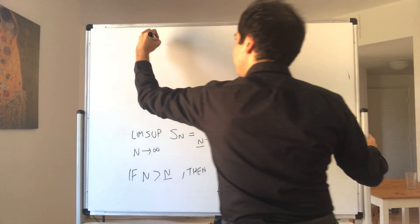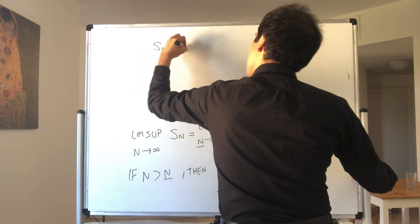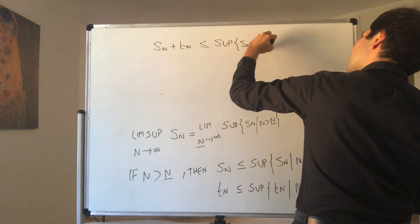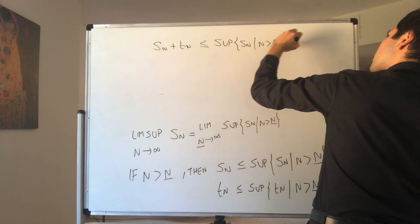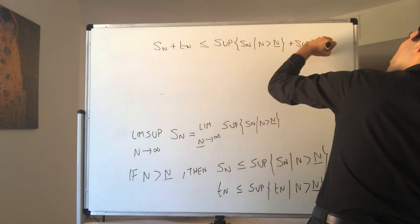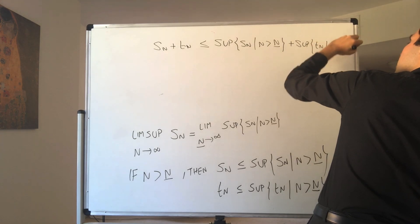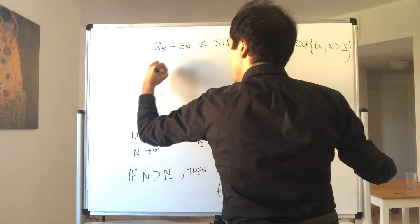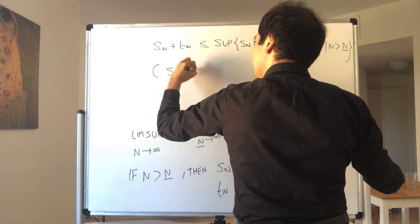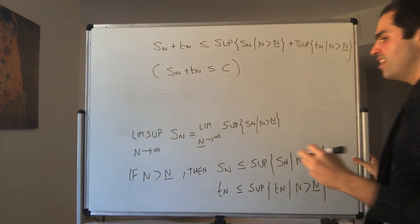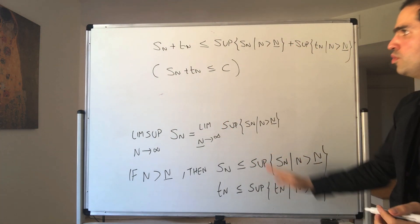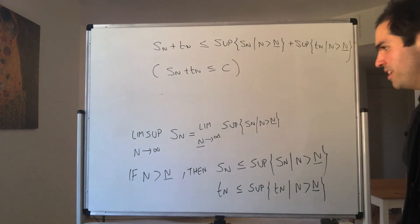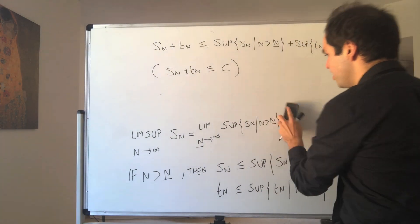Then Sn plus Tn is less than or equal to the sup of Sn where N is bigger than capital N, plus the sup of Tn where N is bigger than capital N. But you see, this is a constant. So in some sense, what we're saying is that for every N, Sn plus Tn is less than or equal to this constant. So all you need to do is take the sup of this for all N bigger than capital N.